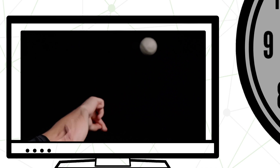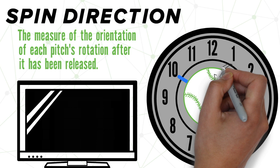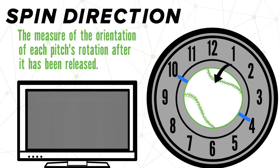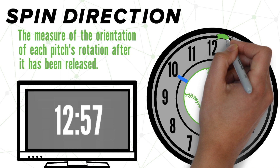We can now take a look at our clock, and we would see that this pitch has a spin direction of about 1 o'clock. To be more precise, every pitch is also measured numerically, so this pitch actually had a spin direction of 12:57. The minutes can be confusing at first, but all they're telling you is how far in between two hours each pitch falls. This example is pretty much right at 1 o'clock.